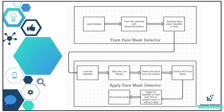You can also get the basics of how neural networks work. Phase one covers training the face mask detector: loading the dataset, training the classifier with Keras/TensorFlow, and serializing the classifier to disk. In phase two, we load the classifier, start the live stream, detect faces using the ROI concept, extract ROI from faces, apply the classifier to each face ROI to predict whether the person is wearing a mask or not, and then show the final results.